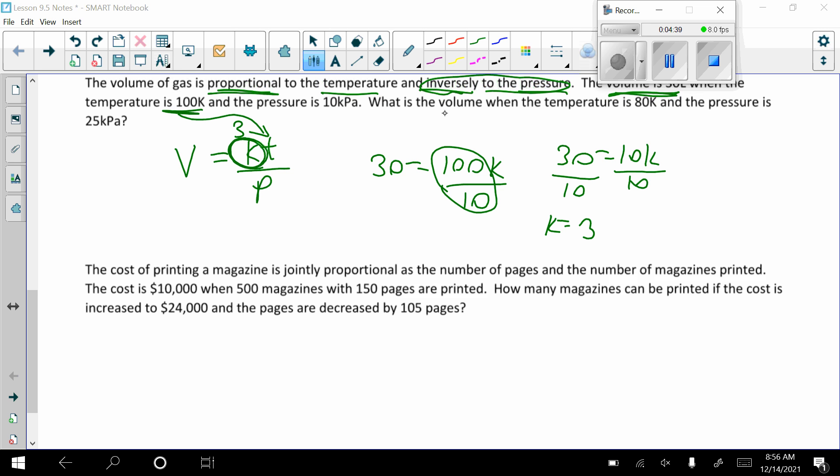So it says, what is the volume? So we're looking for V when the temperature is 80 and the pressure is 25. So we're literally going to type this into our calculator and we end up getting a decimal. So I'm going to call that 9.6 liters.